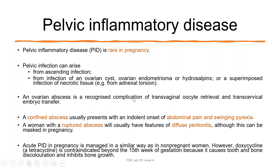An ovarian abscess is a recognized complication of transvaginal oocyte retrieval or transcervical embryo transfer. A confined abscess can cause severe sudden-onset pain and swinging pyrexia; if ruptured, it can cause diffuse peritonitis. Acute PID management is similar to that in non-pregnant women. However, doxycycline is contraindicated beyond 15 weeks of pregnancy due to its teratogenicity — it can cause tooth and bone discoloration and inhibit bone growth.